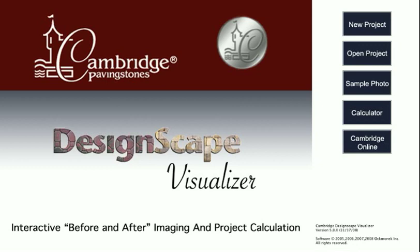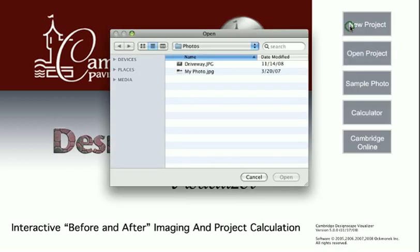To begin a new project, click the New Project button. After a photo is chosen, it will appear on the screen. You are now in the field defining mode.